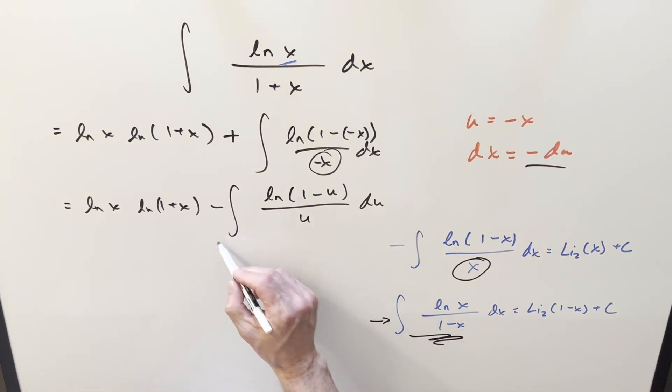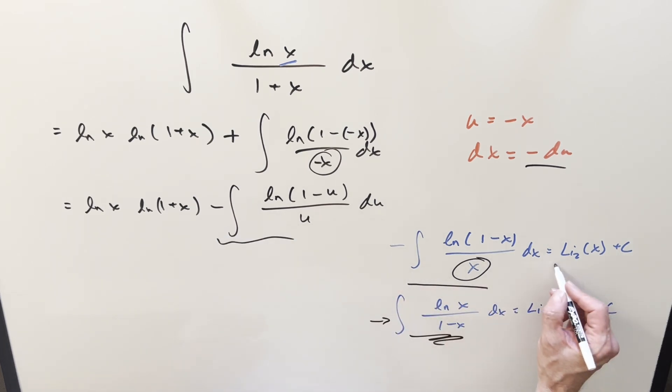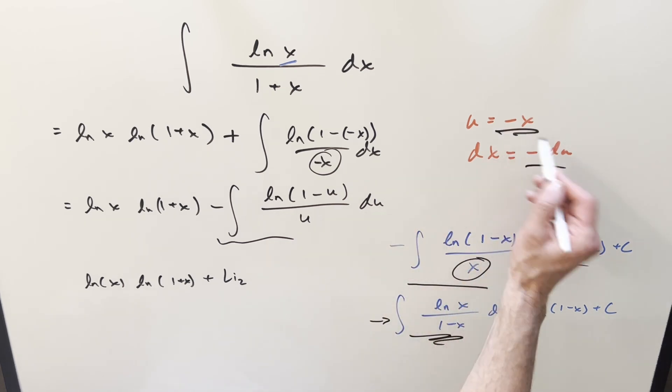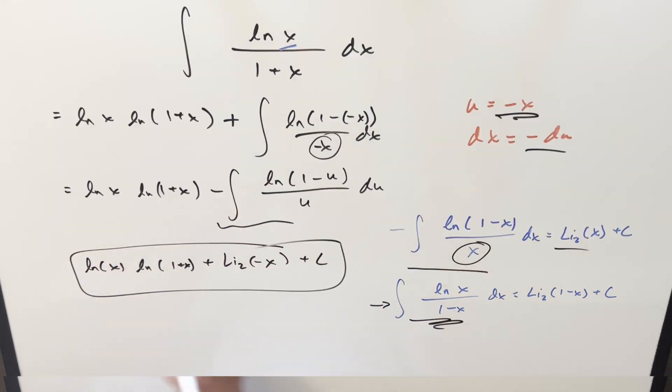But now doing that, this thing is going to be in exactly this form, so we can call this thing dilogarithm. So it's going to be, we're going to have natural log of x times natural log one plus x, and then now this is going to be plus, this is positive, so this is going to be positive dilogarithm, but our input is u. Let's just back substitute because it's pretty easy. So we'll just back substitute with our minus x, add a plus c on there, and that's it. So there you go. I think it's my first video doing an indefinite integral with the dilogarithm.